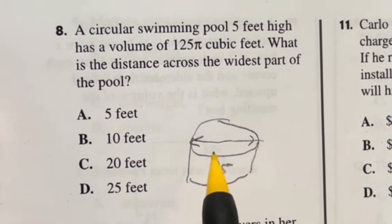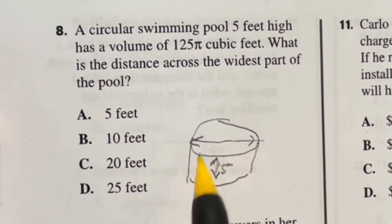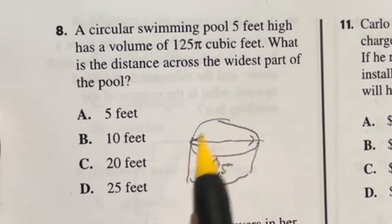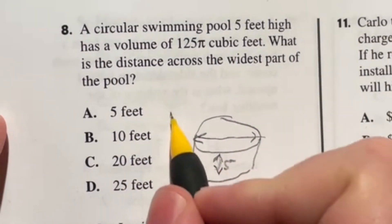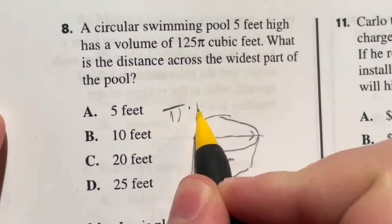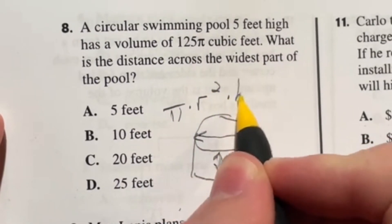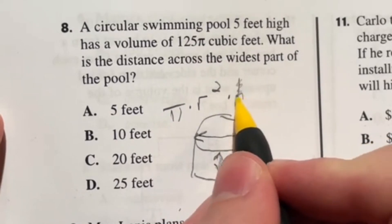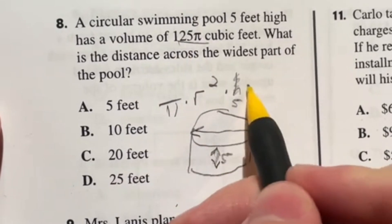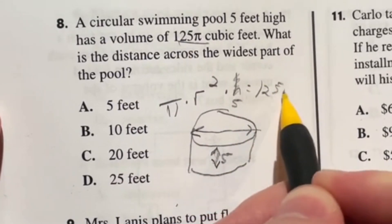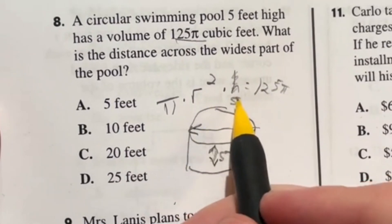When we're going through here, the volume of a cylinder like this is the area of the circle times the height, and the area of a circle is π times the radius squared. Then you multiply that by the height. In this case, the only thing we know is the height, that's five, and we know that the final answer for this is 125π. So the first thing we're going to do is divide that five out.